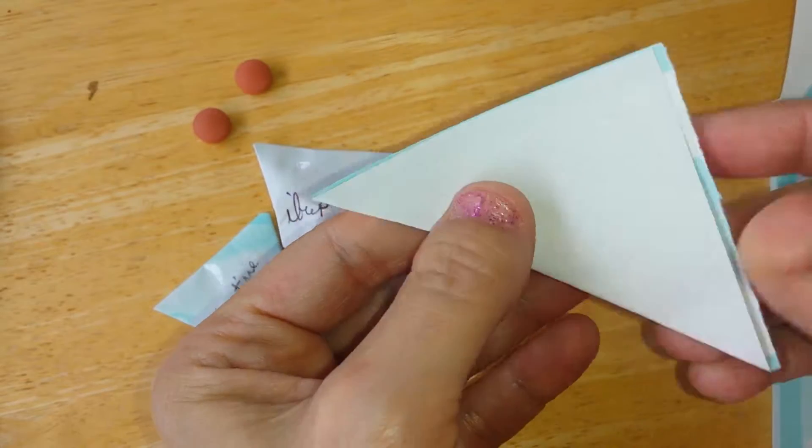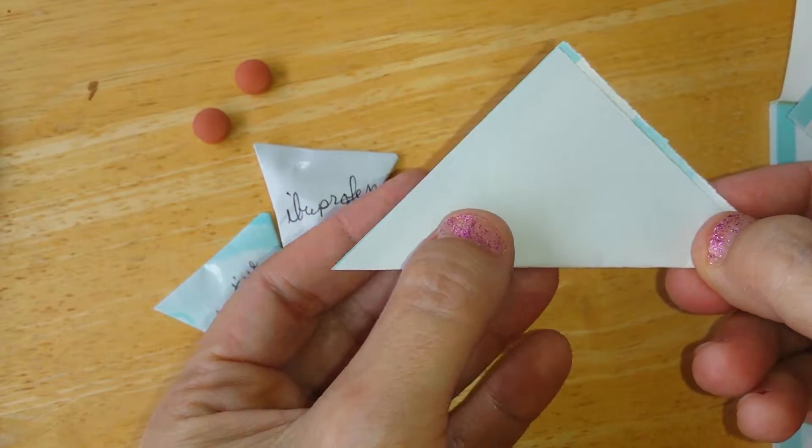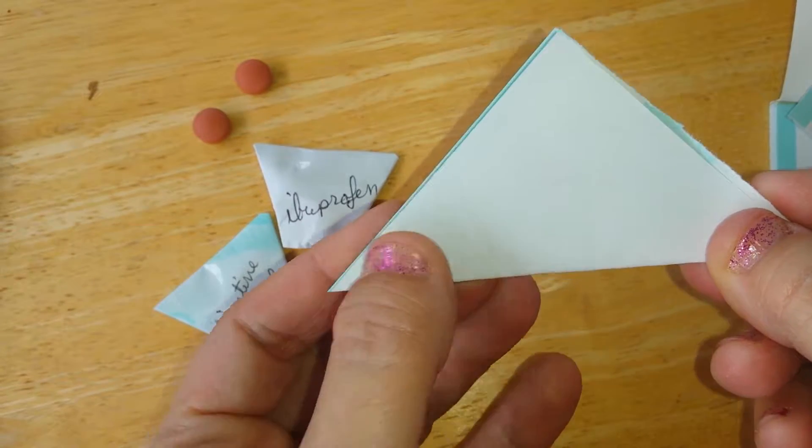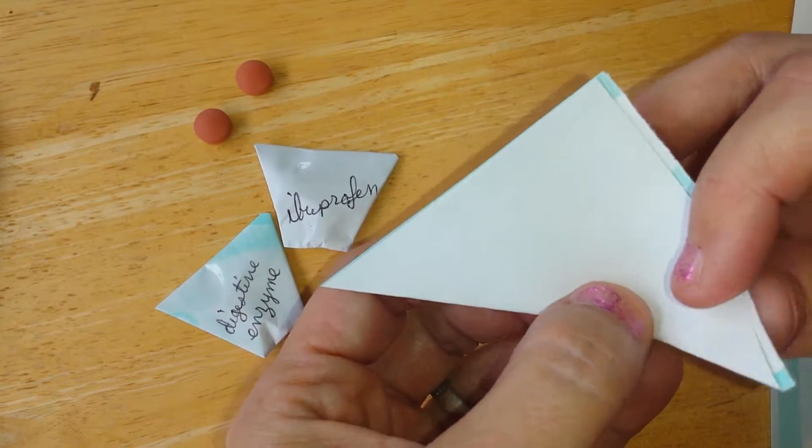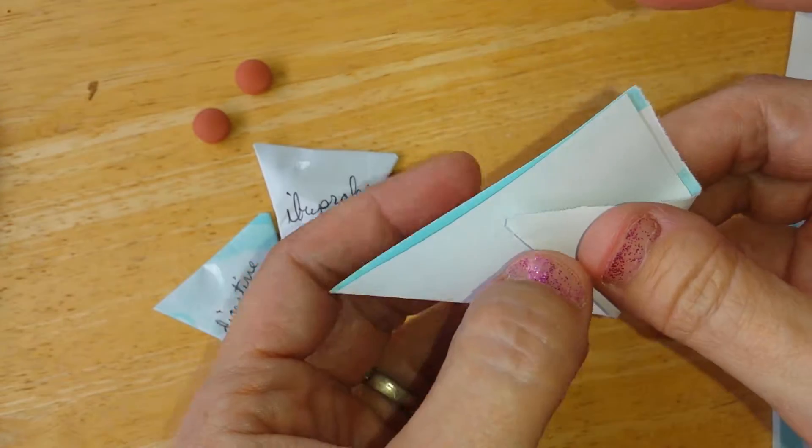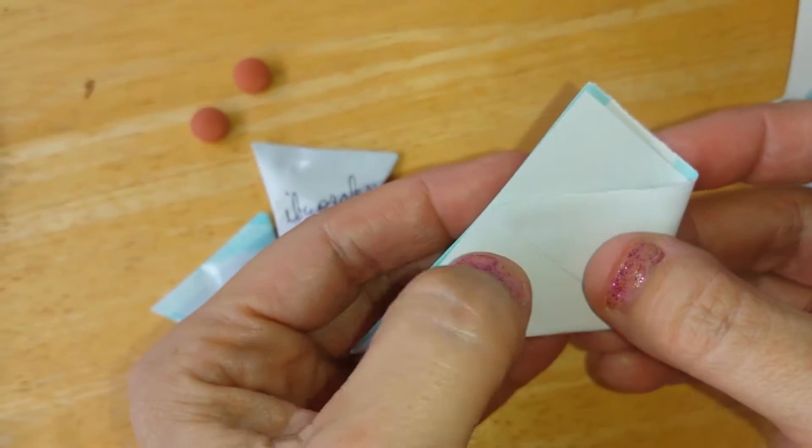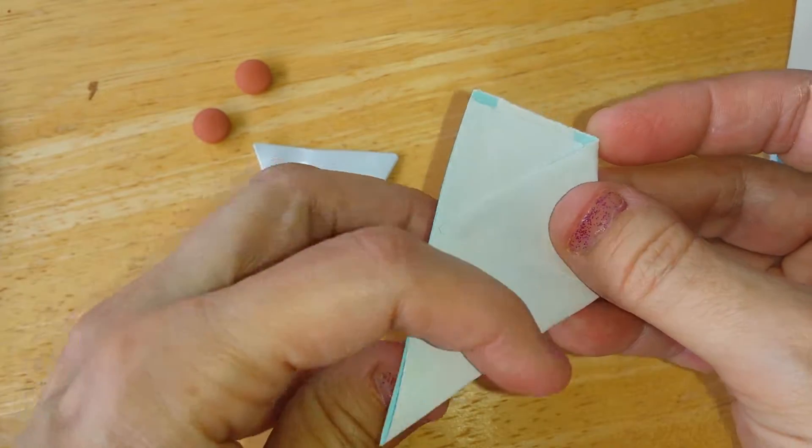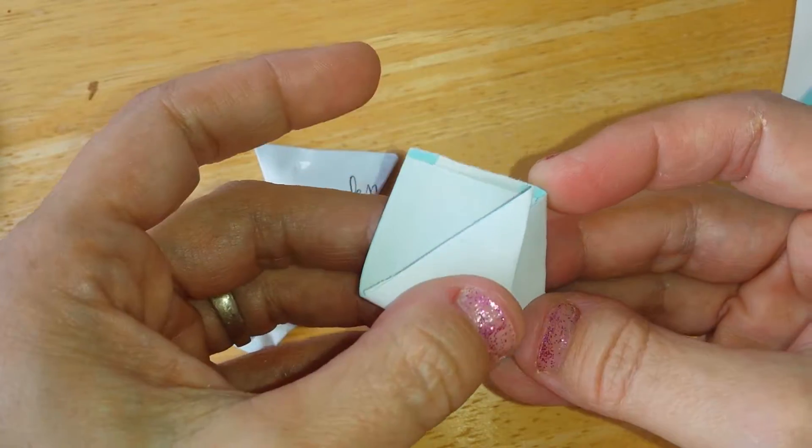And now you have this triangle. Have the point, the middle point facing up, and take like one arm at the bottom and bring it to the other shoulder of it. Fold it and do the same thing on the other end.